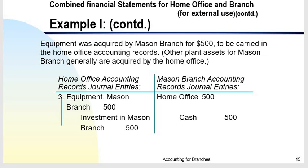Third transaction: equipment was acquired by Mason Branch for $500, to be carried in the home office accounting records. The branch purchased the equipment, but the home office keeps the records. The home office entry is: debit Equipment — Mason Branch, credit Investment in Mason Branch. The branch entry is: debit Home Office, credit Cash.